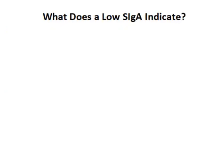We'll look at some test results soon and we'll see examples of secretory IGA in the saliva and stool. Someone can either have a normal secretory IGA, a low secretory IGA, or a high secretory IGA.